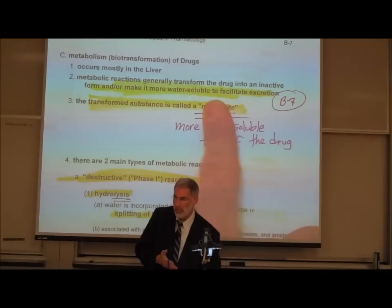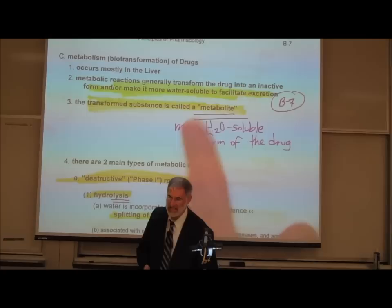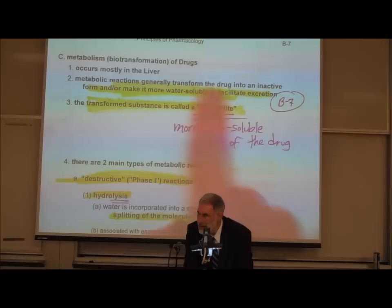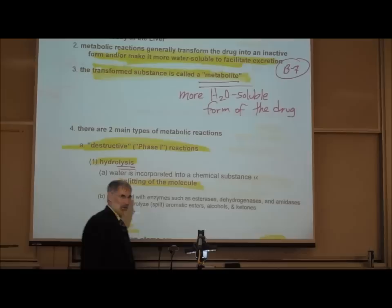This inactive form of the drug, this less fat-soluble or more water-soluble form, facilitates its excretion by the kidneys, and this transformed form is called a metabolite. The metabolite, the metabolized form of a drug, is the more water-soluble form of the drug.